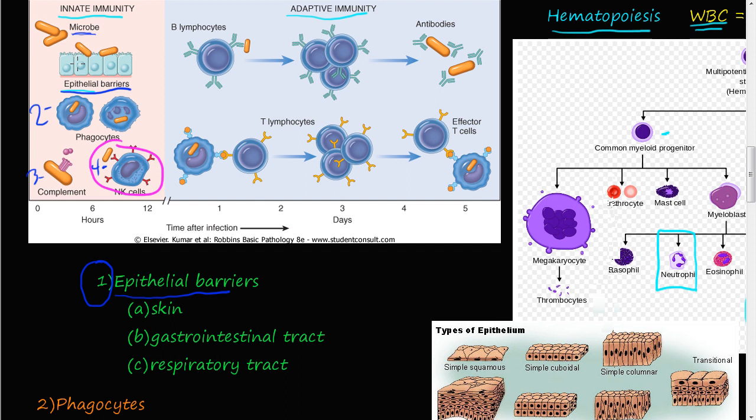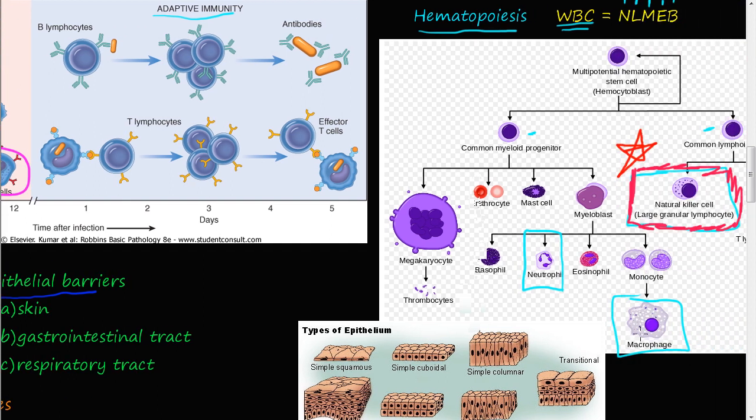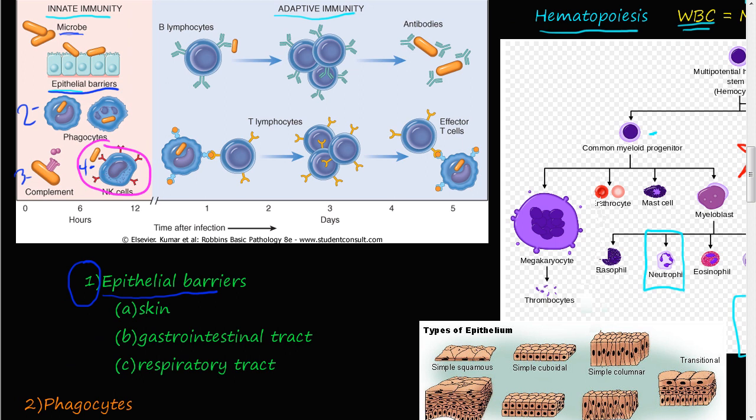We talked about in the last video how epithelial barriers and phagocytes, namely neutrophils and macrophages, are part of the phagocytosis process. We talked about complement a little bit.